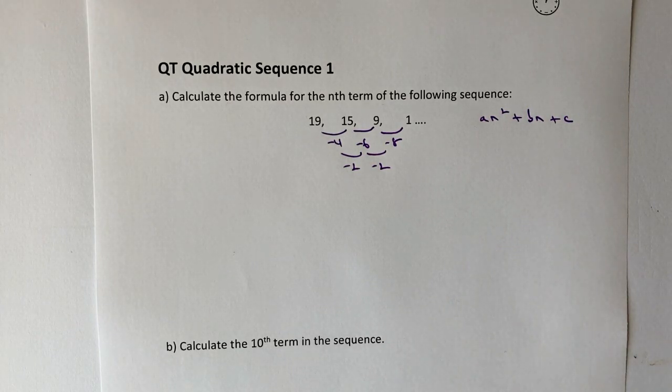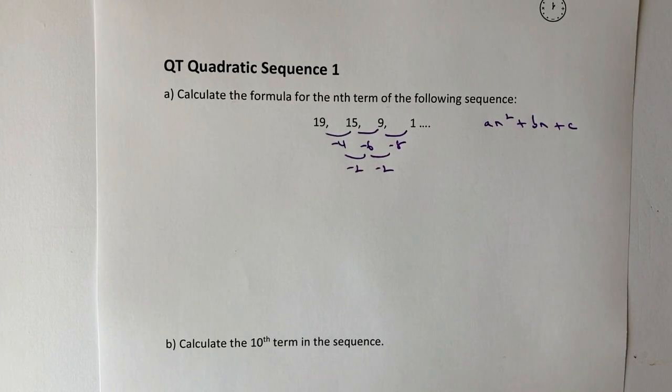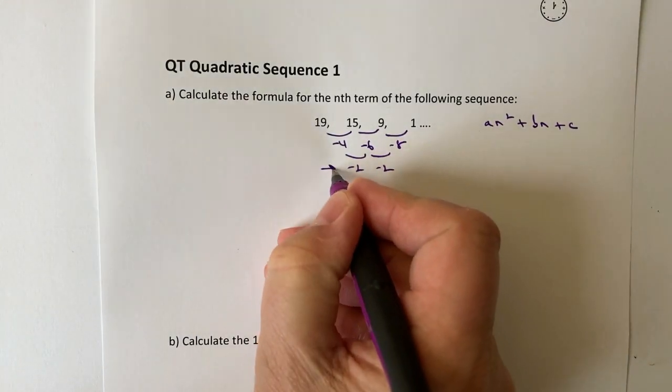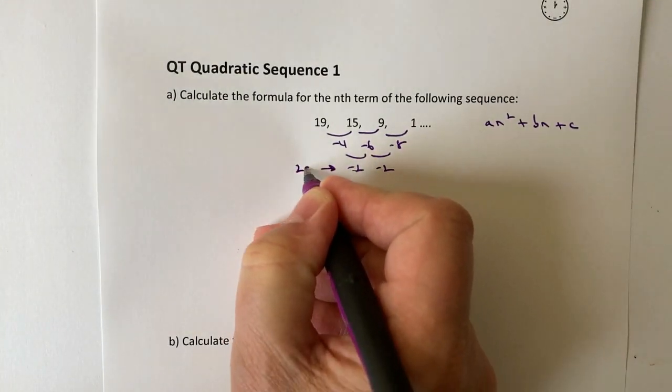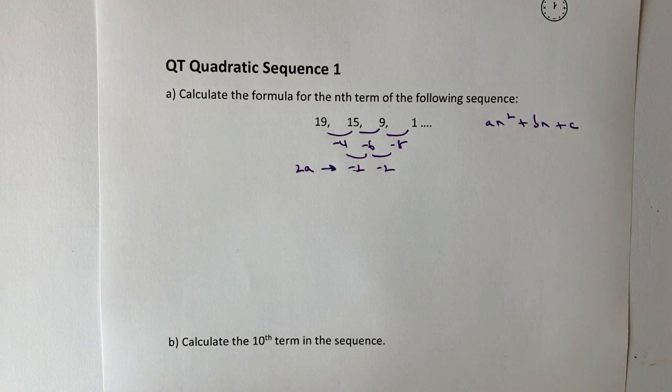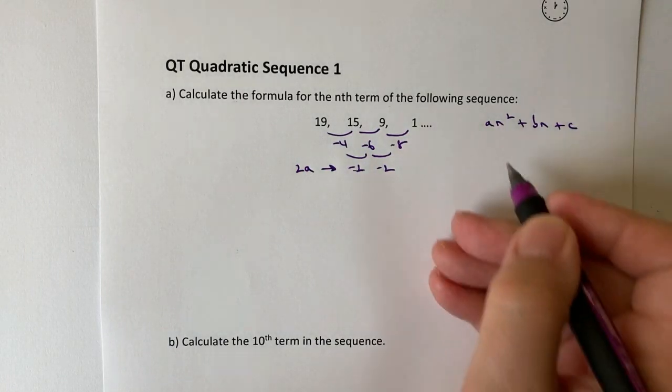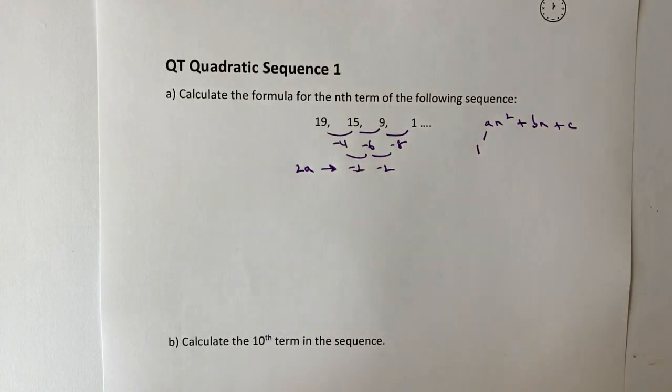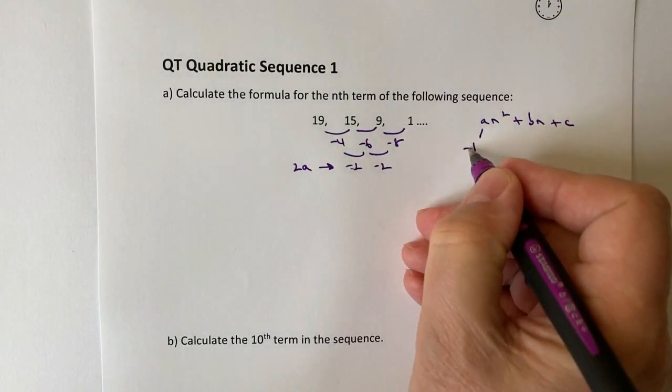Now, I do this slightly differently. And there are some videos that you can have a look at that will offer you different ways on how to do this. In my particular case, I tend to use the formula method where what I say is that this minus 2 is the equivalent to 2a. If it's the equivalent to 2a, it means in this particular case that a must be 1, or rather minus 1.